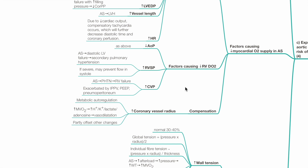Factors causing reduced right ventricular delivery of oxygen include: reduced aortic root pressure as above; increased right ventricular systolic pressure due to secondary pulmonary hypertension, which if severe may prevent flow in systole; and increased CVP. Aortic stenosis leads to pulmonary hypertension and right ventricular failure. Increased CVP leads to reduced coronary perfusion pressure, exacerbated by positive pressure ventilation, PEEP, and pneumoperitoneum.